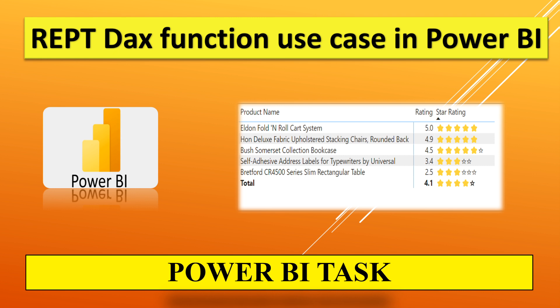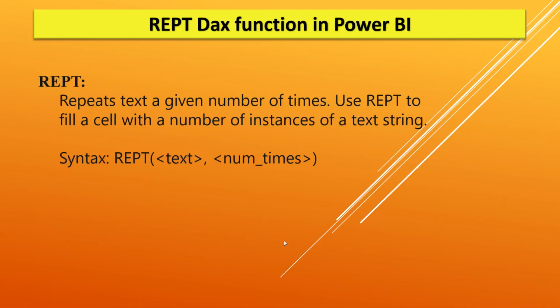Hello everyone, welcome back to my channel. Today we'll see the REPT DAX function in Power BI — the use case and how to use it. The REPT function repeats text a given number of times. We can use this function to fill a cell with a number of instances of a text string. For example, if we have products and their customer ratings, we can show those ratings as stars in Power BI.